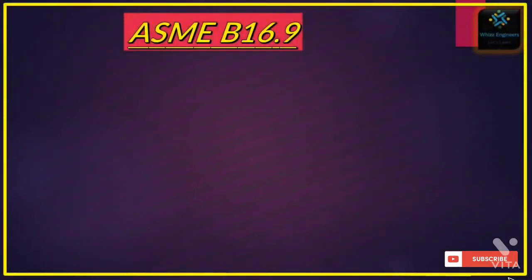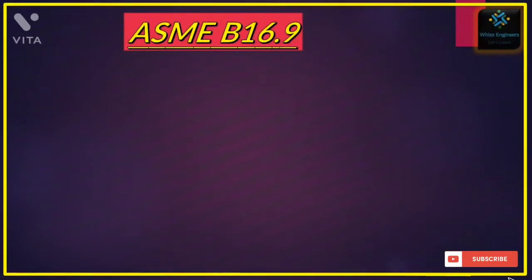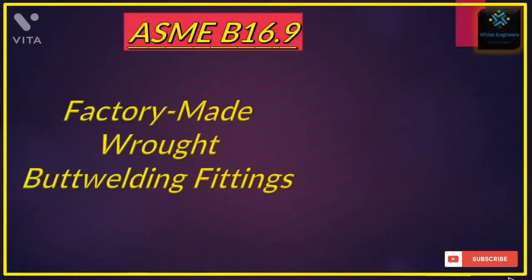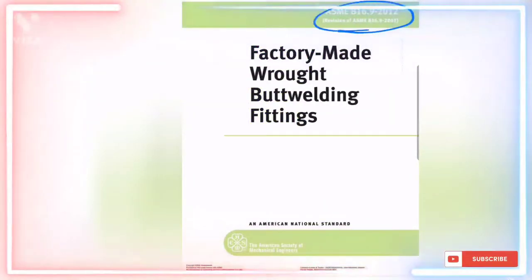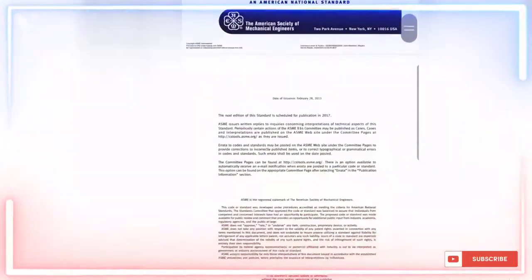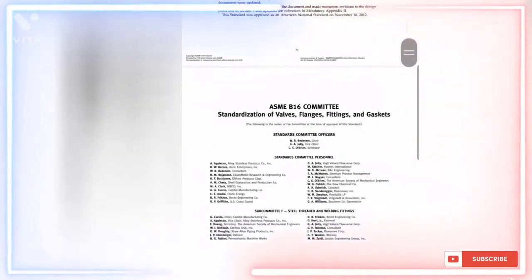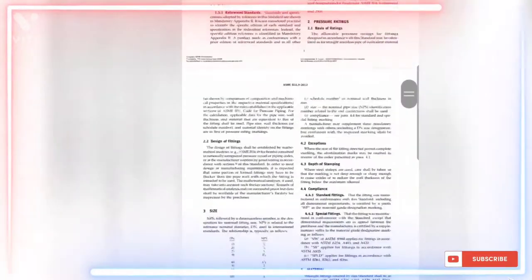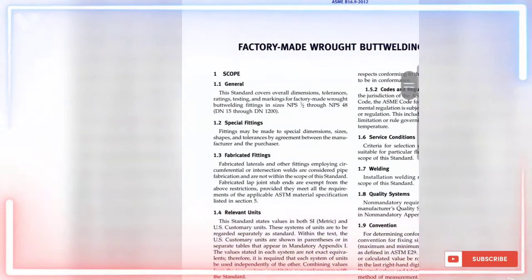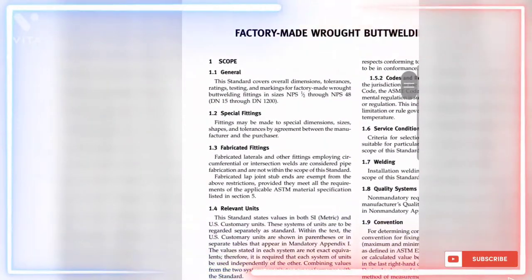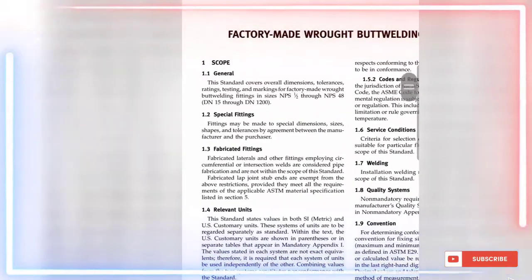The dimensions and tolerances for elbows are given in ASME B16.9. This standard covers pipe fittings from 1.5 inch to 48 inch.